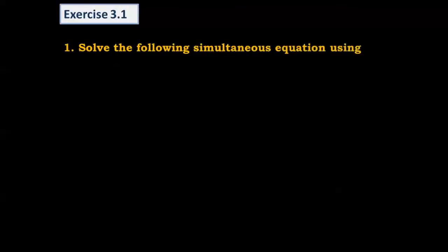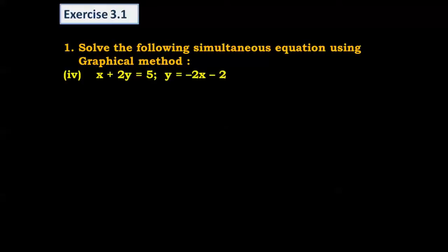Now we will start with the graphical method for solving simultaneous linear equations. Question number one: solve the following simultaneous equations using the graphical method. Two equations are given: x + 2y = 5 and y = -2x - 2. For each equation, plotting the graph gives a straight line, and the point of intersection of both lines gives the solution. To plot each line, we need a minimum of three points.